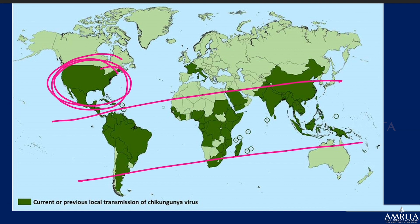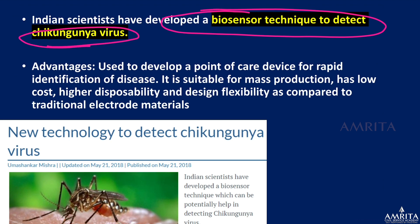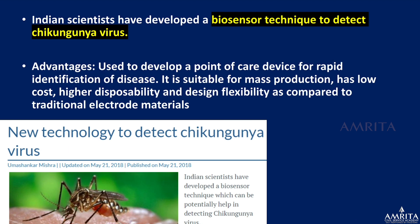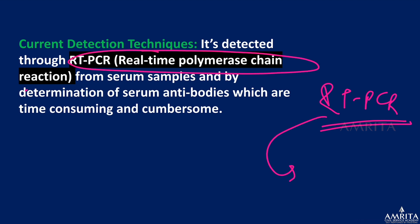Currently, Indian scientists have developed a new biosensor technique to detect the chikungunya virus, which will lead to rapid identification of the disease. It is suitable for mass production, low cost, and high disposability. Earlier, the RT-PCR (Real-Time Polymerase Chain Reaction) test was used for chikungunya — the biosensor technique is an evolution over it.